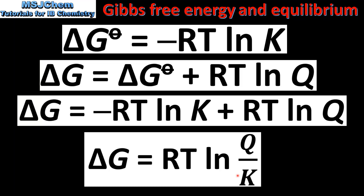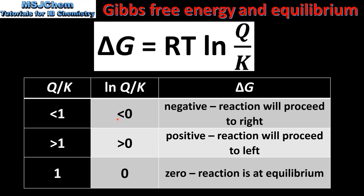If Q/K is less than 1, the natural log of Q/K is less than 0 and ΔG is negative, meaning the reaction will proceed to the right to reach equilibrium. If Q/K is greater than 1, the natural log of Q/K is greater than 0 and ΔG will be positive, meaning the reaction will proceed to the left to reach equilibrium. If Q/K equals 1, the natural log of Q/K is 0 and ΔG is 0 — the reaction is at equilibrium.